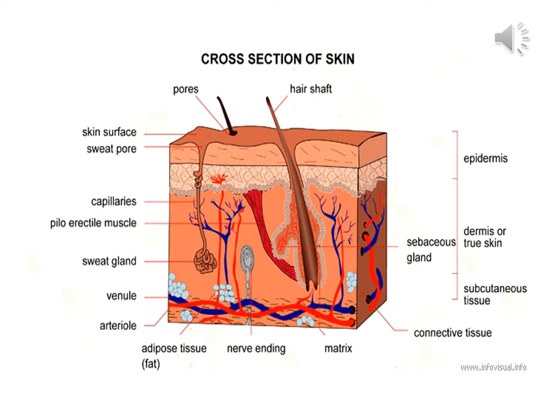This is the cross-section of the skin, which we learned about during Form 2. There are several types of receptors: the warm receptor and the cold receptor, related to body temperature.